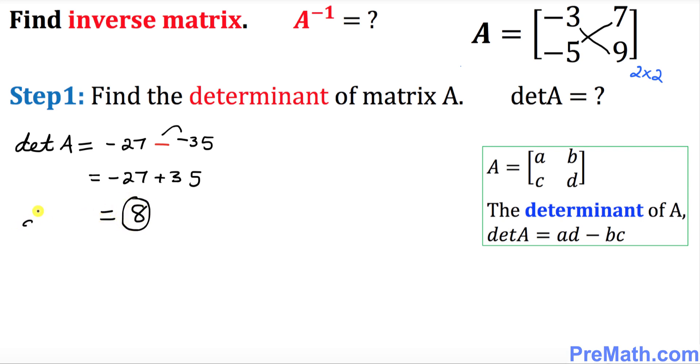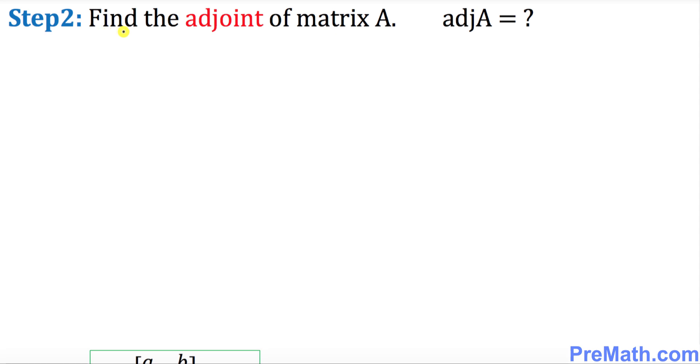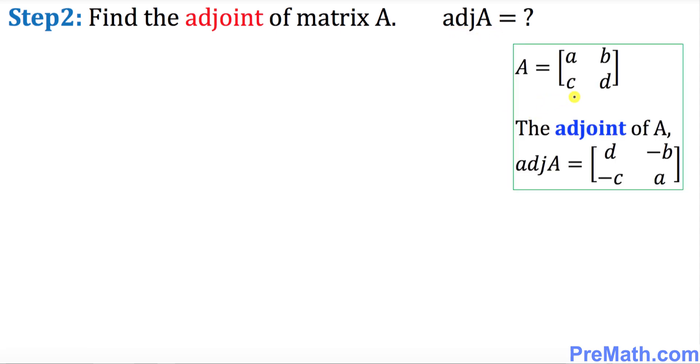So that means the determinant of A turns out to be eight. In step two, we will find the adjoint of our given matrix A—that means we are looking for adj A—and we will use this fact right up here to find the adjoint of this given matrix A.